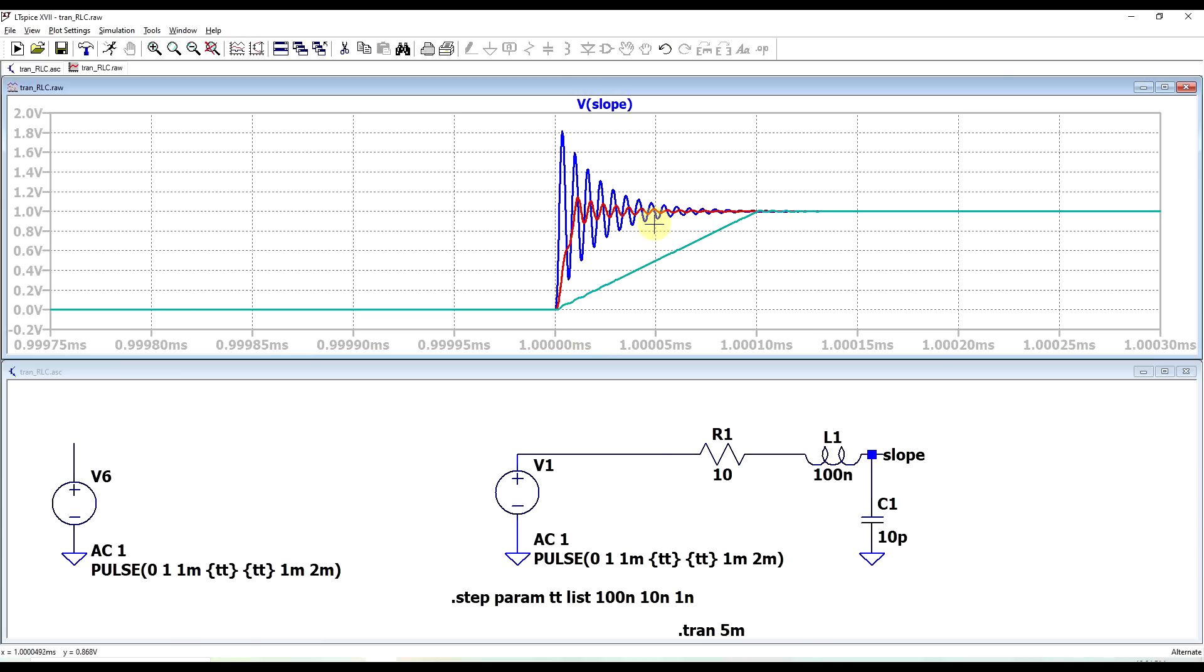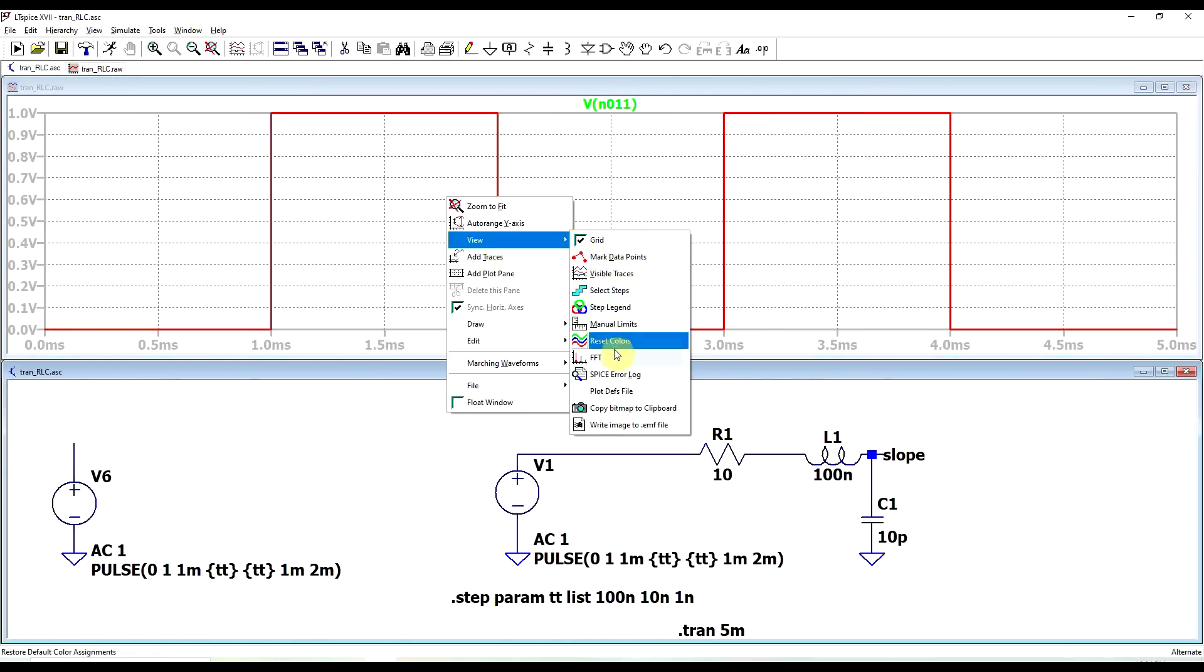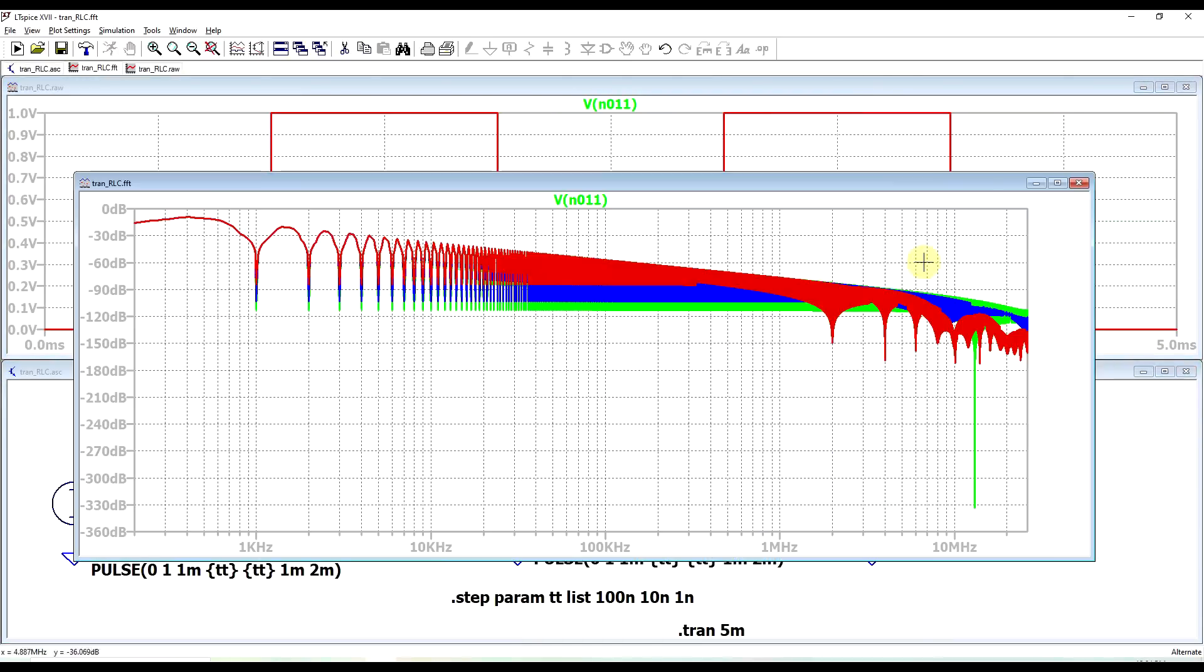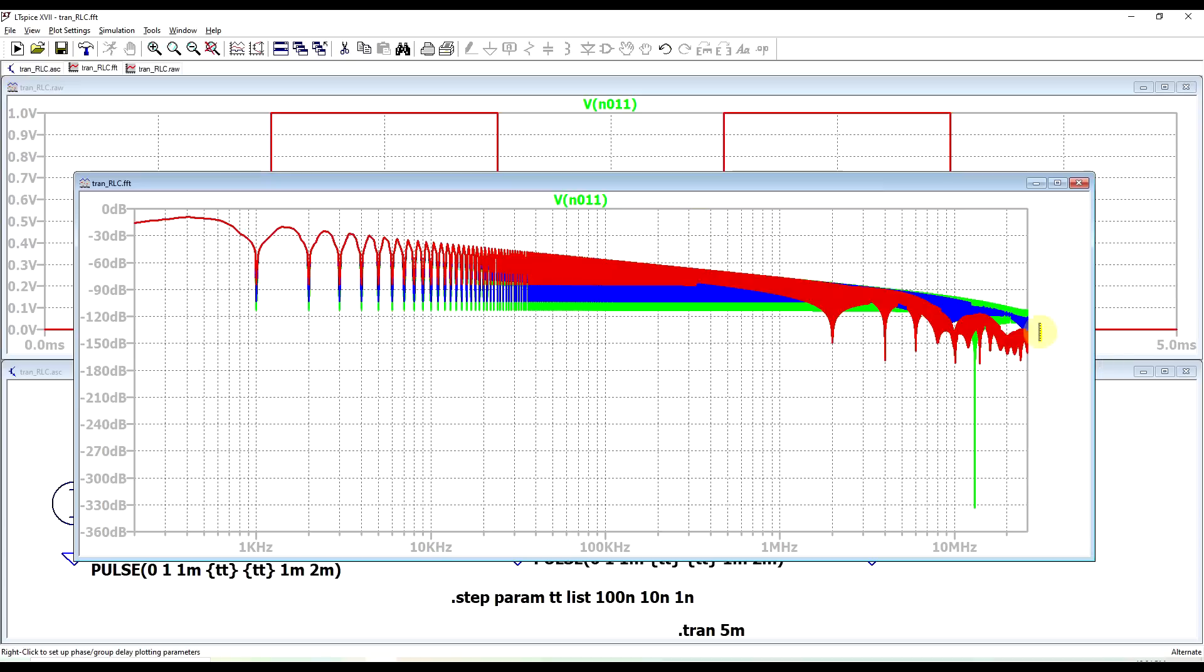Now to understand why this is happening, we can look at the base waveform and analyze its FFT spectrum. What we can notice here is that the faster the transition time is, so green is the 1 nanosecond one, red is the 100 nanosecond one.